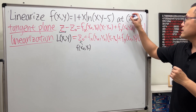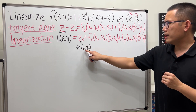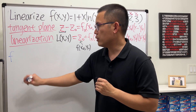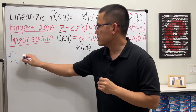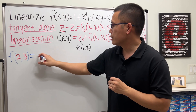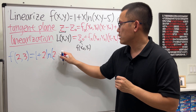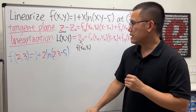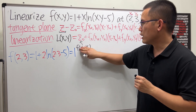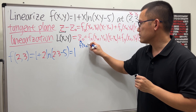Let's first figure out f(x0, y0), which is f(2, 3). Sometimes they write little a, little b — just notations. So we plug in x = 2 and y = 3 into the original function: 1 + 2 · ln(2 · 3 − 5) = 1 + 2 · ln(1) = 1 + 2 · 0 = 1. So z0 = 1.